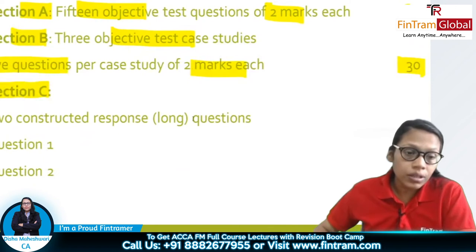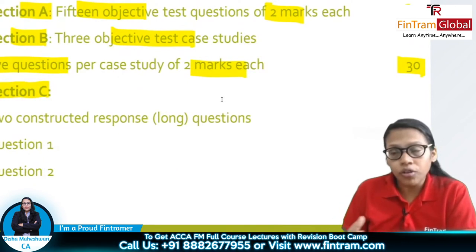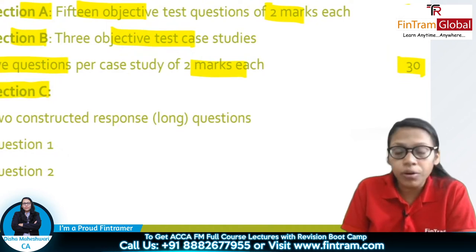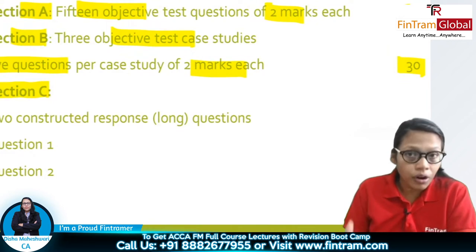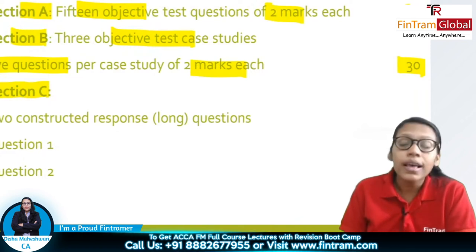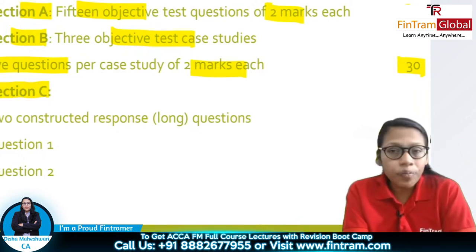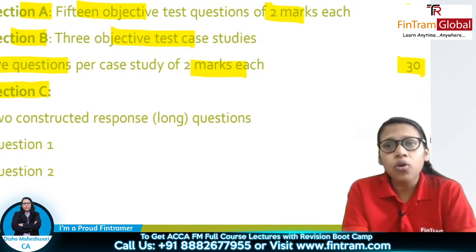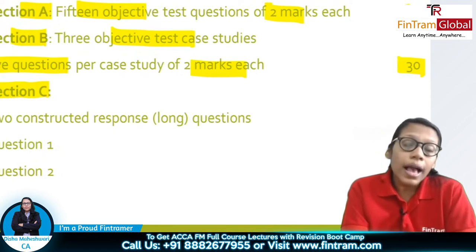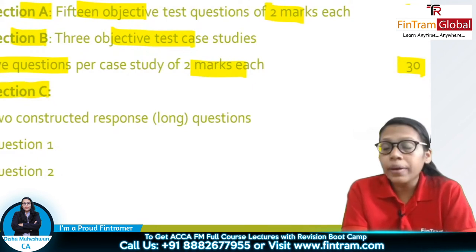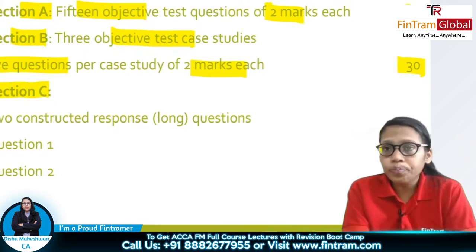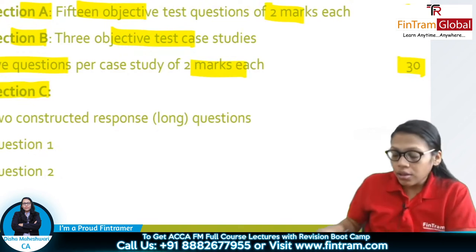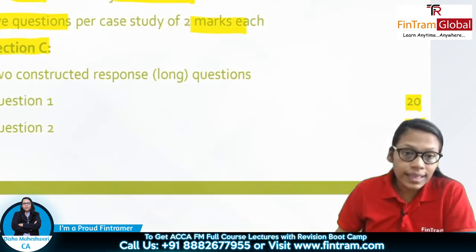Section C contains long case study-based questions. Each question is worth 20 marks — Question 1 for 20 marks and Question 2 for 20 marks — making Section C worth 40 marks in total. Section C is very important, and questions in it majorly come from working capital, cost of capital, risk management, and investment appraisal.